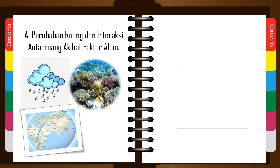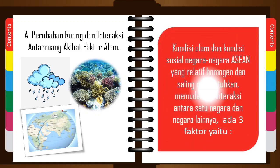Untuk yang pertama, perubahan ruang dan interaksi antar ruang akibat faktor alam. Kondisi alam dan kondisi sosial negara-negara ASEAN yang relatif homogen dan saling membutuhkan memudahkan interaksi antara satu negara dan negara lainnya. Di sini ada tiga faktor, yaitu faktor iklim, faktor geologi, dan faktor ketersediaan sumber daya alam. Nanti kita akan bahas satu persatu dari tiga faktor tersebut.